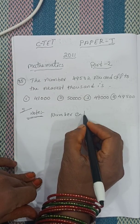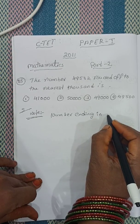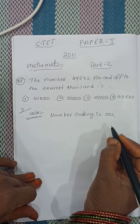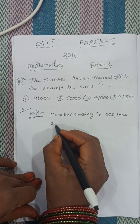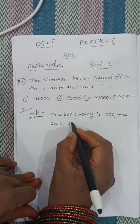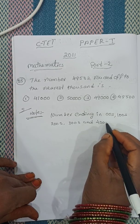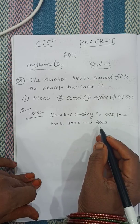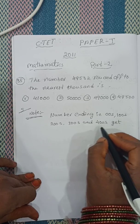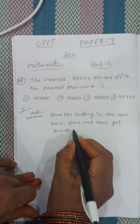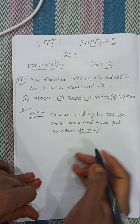Numbers ending in zero hundreds, 100, 200, 300, and 400 get rounded down.